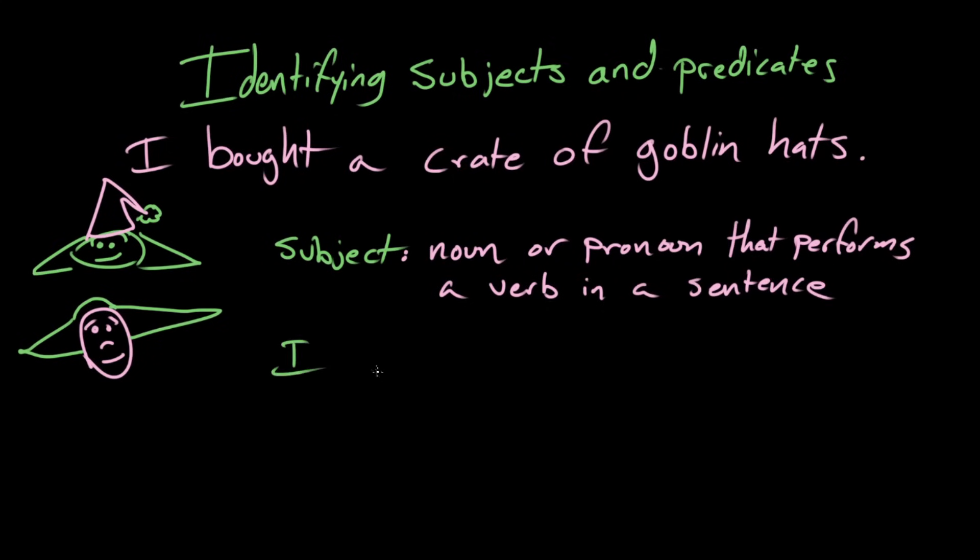Because you can say like, I am happy. Am is a verb, but that's not like an action that I'm doing. Right, you can't just actively am. Right. But in this sentence, I am happy, the subject, I, is performing the verb to be, or am. Right. Gotcha.